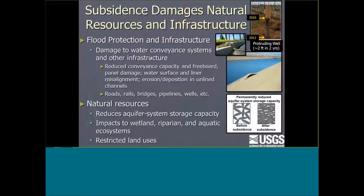There are places in the valley now where water is being bottlenecked because it's running into bridges, and those have to be replaced. To keep water flowing, levees must be built up to maintain the water surface elevation. If it's a lined canal, you get buckles in the lining, breaks, and water seeping behind the lining, impairing levee integrity. If it's an unlined channel such as the East Side Bypass in the San Joaquin Valley — a very important flood control channel — you start getting unintended depositional patterns.